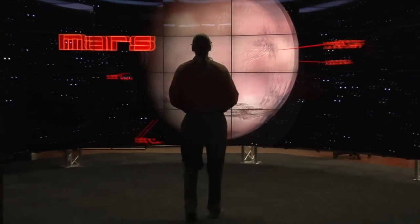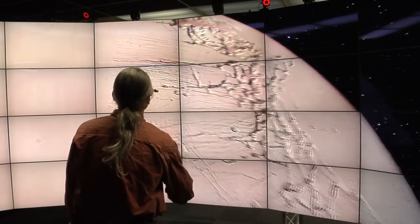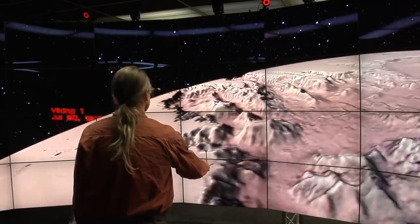The camera tracking system allows CAVE 2 to draw the 3D world from the point of view of the tracked viewer. The ambisonic audio system enables sounds to be placed in 3D space.